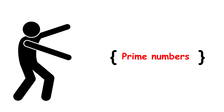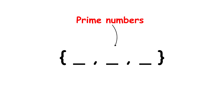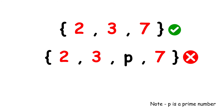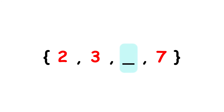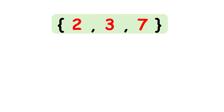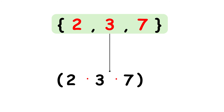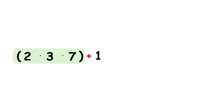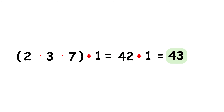To start, take some finite set of prime numbers. An example would be the set with the prime numbers 2, 3, and 7. Note that we don't need to include all of the prime numbers in a given interval. Our goal is to prove that there's some prime number that we haven't included. To do that, multiply all of the prime numbers in this set together — that is, take their product. After you do that, add 1 to the result. Here, that gives us 2 times 3 times 7 plus 1 equals 42 plus 1 equals 43.